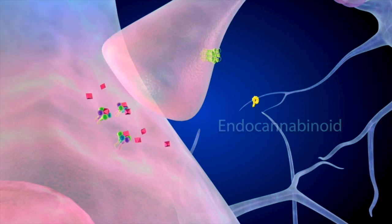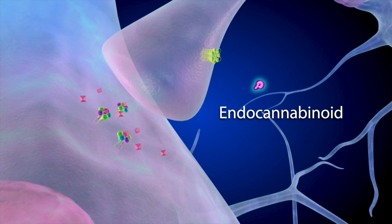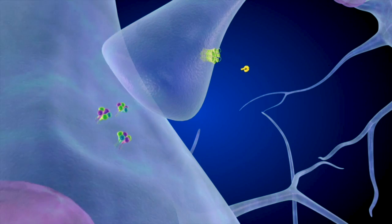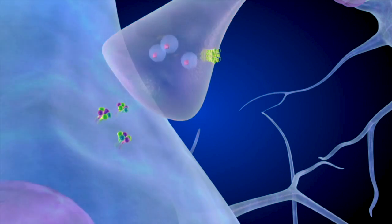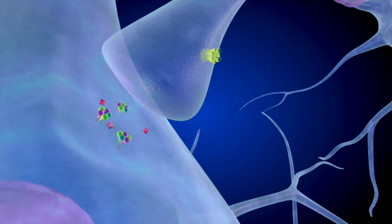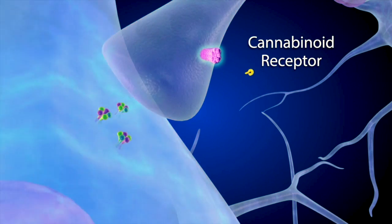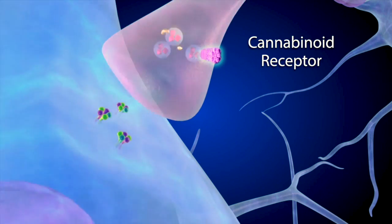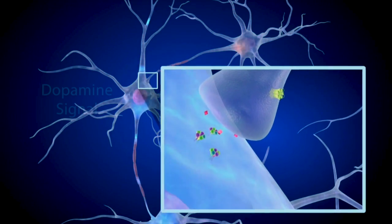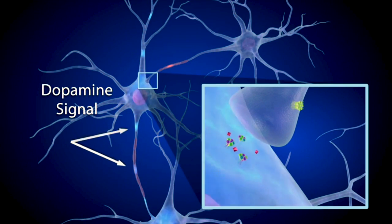Endocannabinoids are neurotransmitters that can indirectly affect dopamine signals by modifying the activity of other neurotransmitters such as GABA. Endocannabinoids, like dopamine, bind to specific receptor proteins located on the surface of some cells. Depending on its current level of activity, the presynaptic dopamine neuron can produce endocannabinoid molecules. These molecules bind to cannabinoid receptors on the adjacent GABA neuron, reducing the amount of GABA it releases. Inhibiting GABA neurons in this way boosts the dopamine signal in the reward synapse.